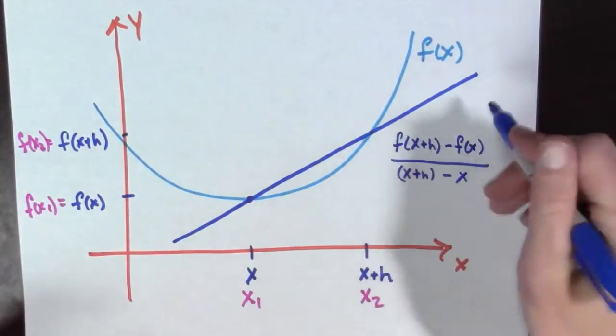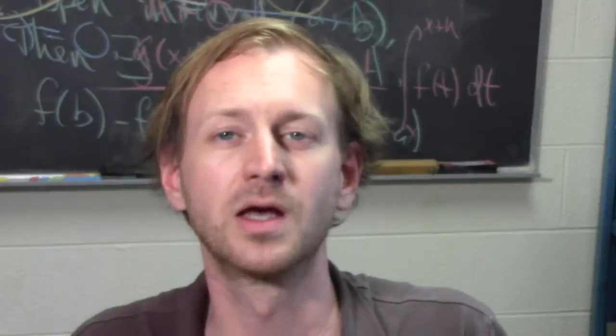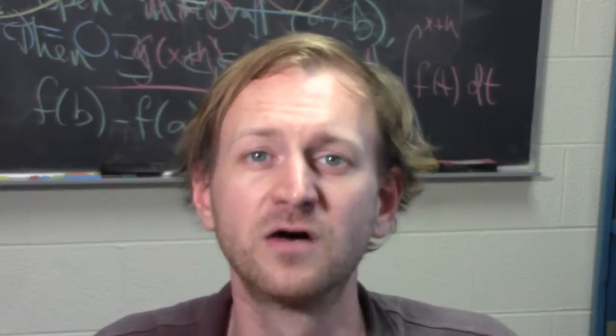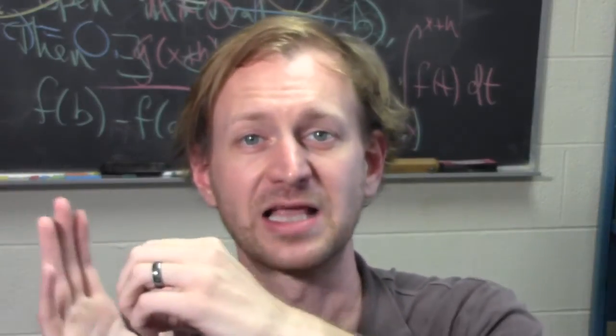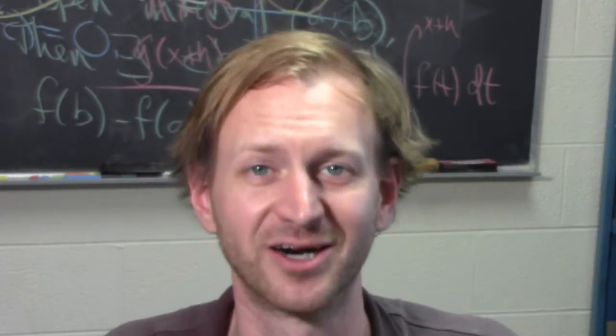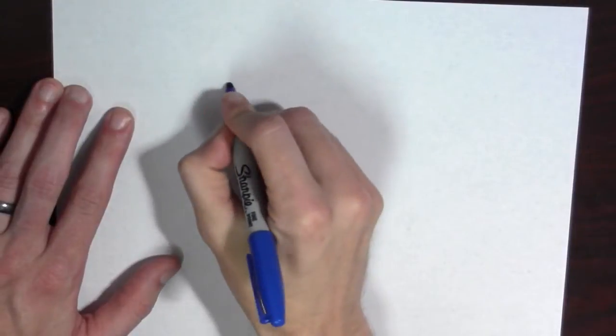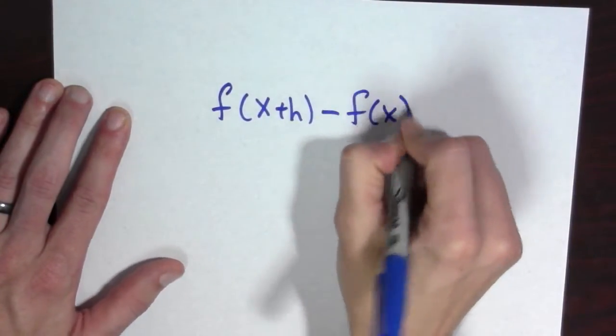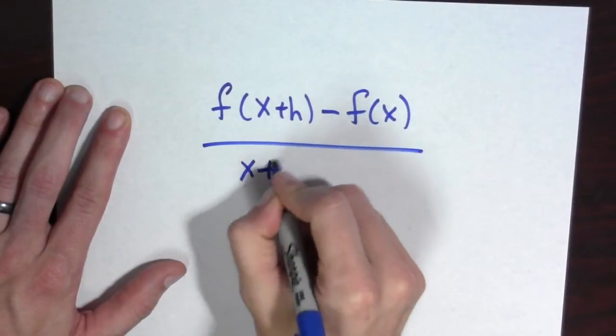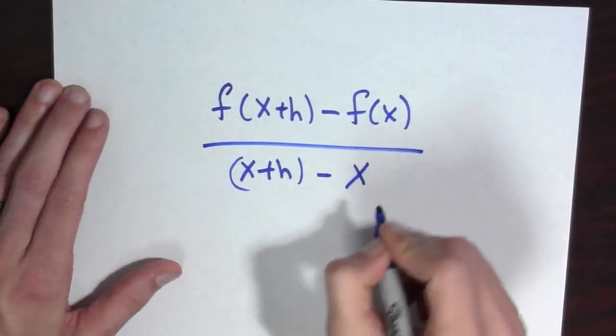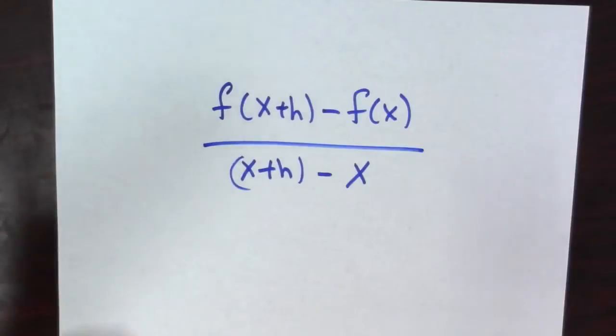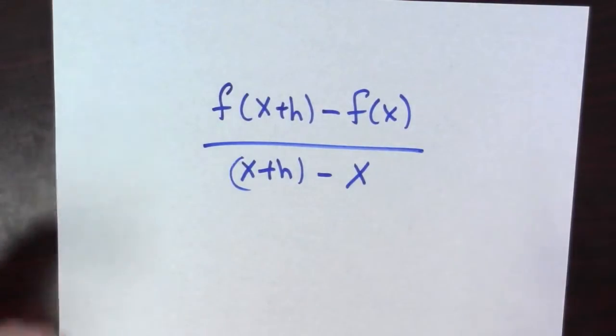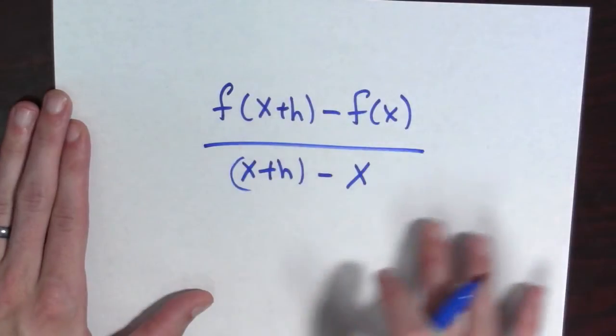So that's the slope of this line. Now a derivative is nothing more than a formula for the slope of a line that's tangent to a curve. So we know we should be looking at f of x plus h minus f of x all over x plus h minus x. And this is really just f of x2 minus f of x1 all over x2 minus x1. But remember,